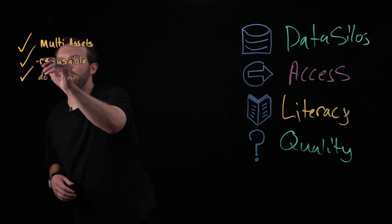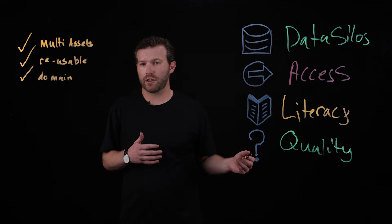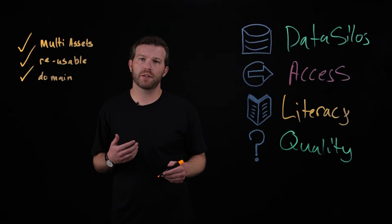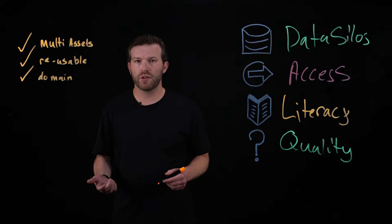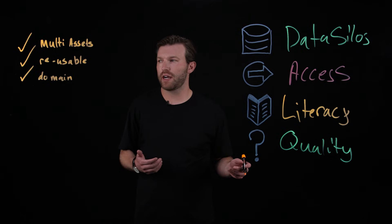Data products need to have a defined domain. This helps end users that are coming into the marketplace be able to find the products they're looking for. A domain could be sales, human resources, operations, just like how a grocery store has different departments in different aisles.